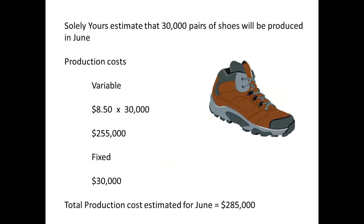Managers can now use this information to estimate costs. Suppose that the firm estimates that a total of 30,000 pairs of shoes will be produced during the next period — what will be the estimate for production costs? The variable costs will be $8.50 times 30,000, giving a total of $255,000. Fixed costs will be $30,000, giving a total production cost of $285,000.